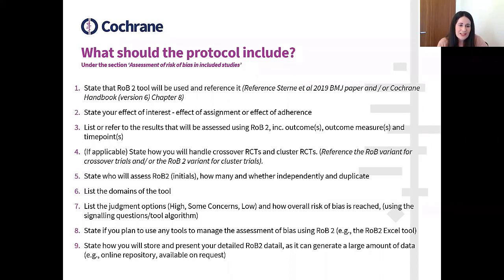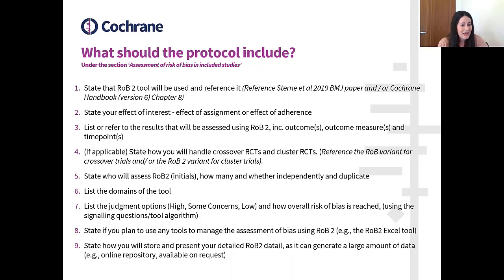You also want to list the domains of the tool and describe the judgment options, which are different from the first tool — high, some concerns, or low — and talk about how a risk of bias judgment is reached using the signaling questions and the algorithm. Also highlight what tool you're going to use to do the assessment; in most cases that's the Risk of Bias 2 Excel tool, available on the website.